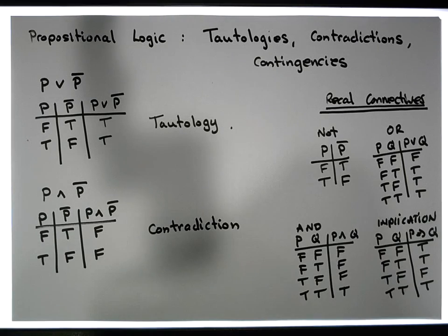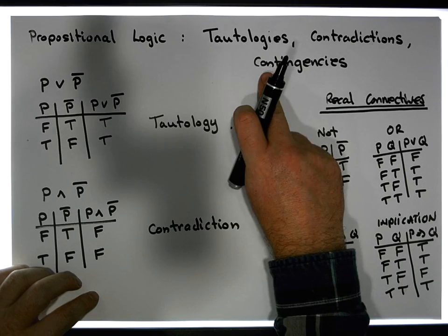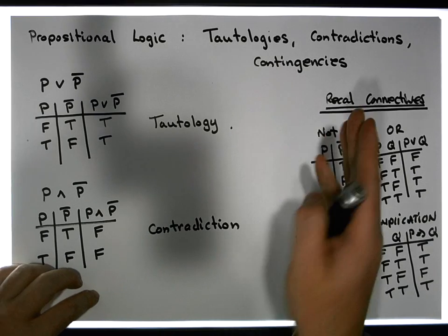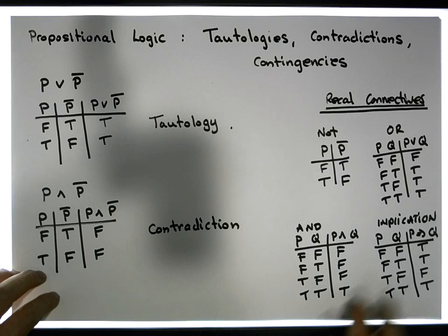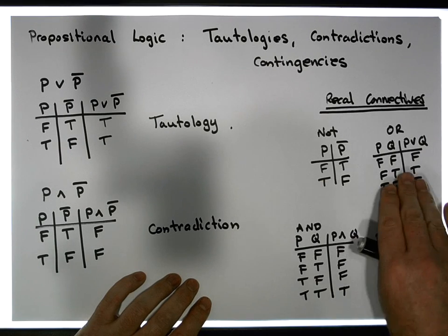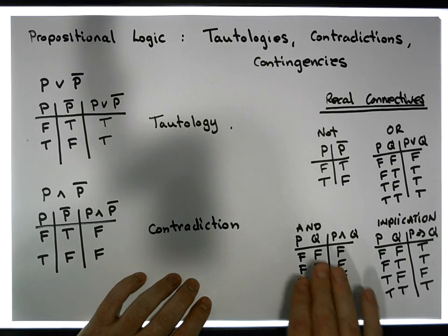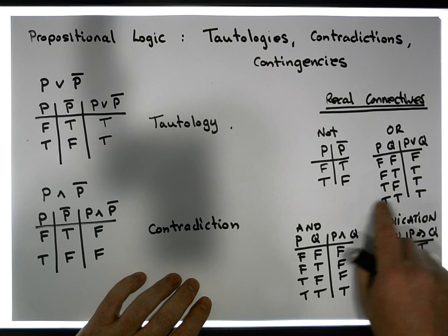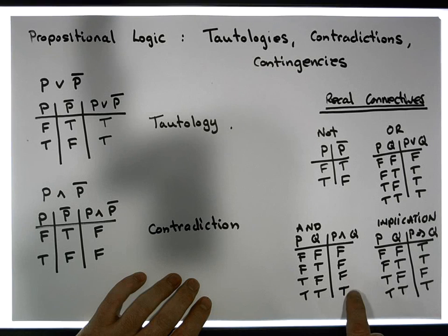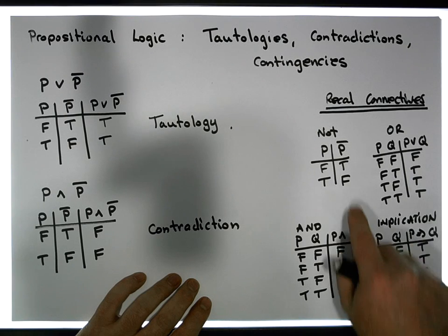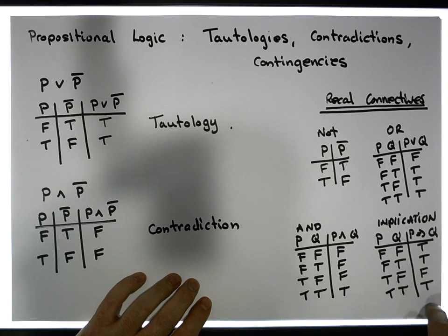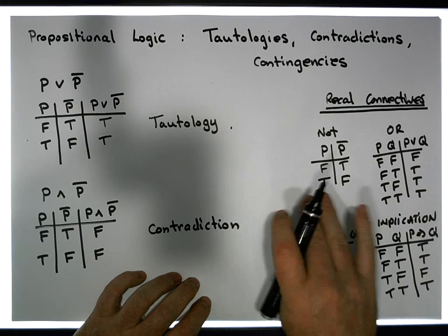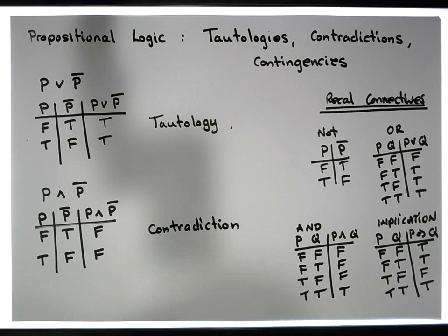Another type of proposition is what's known as a contingency. A contingency is a propositional expression that is a mixture of true and false values. The connectives we defined at the start — OR, AND, implication — all have outputs that are mixtures of trues and falses, so they are actually examples of contingencies. There are four examples here of propositions that are contingencies.